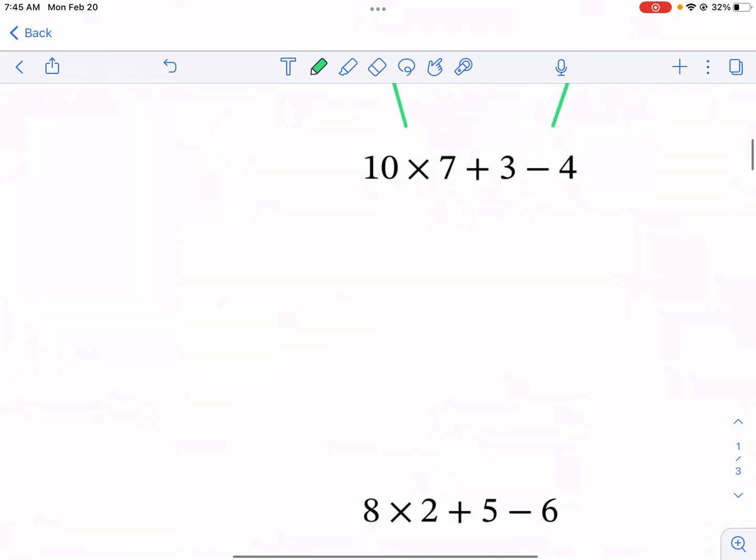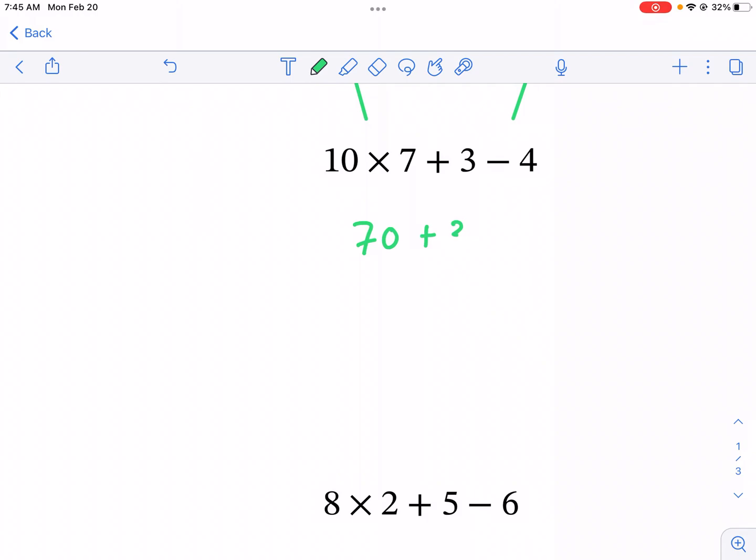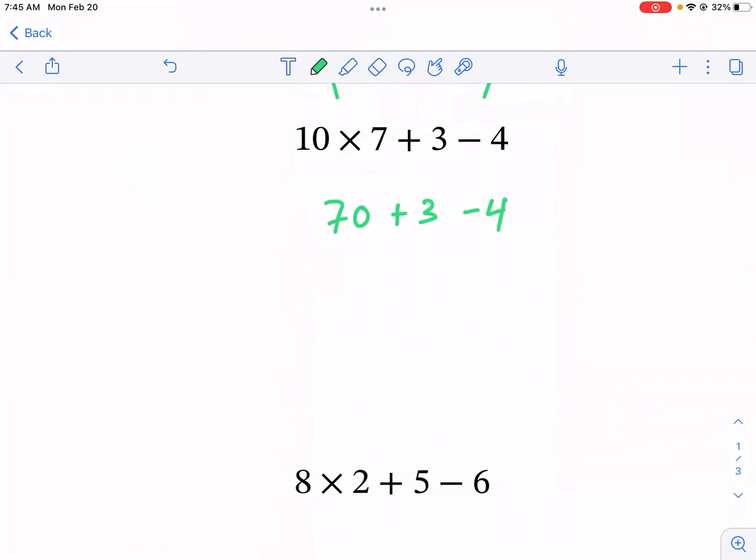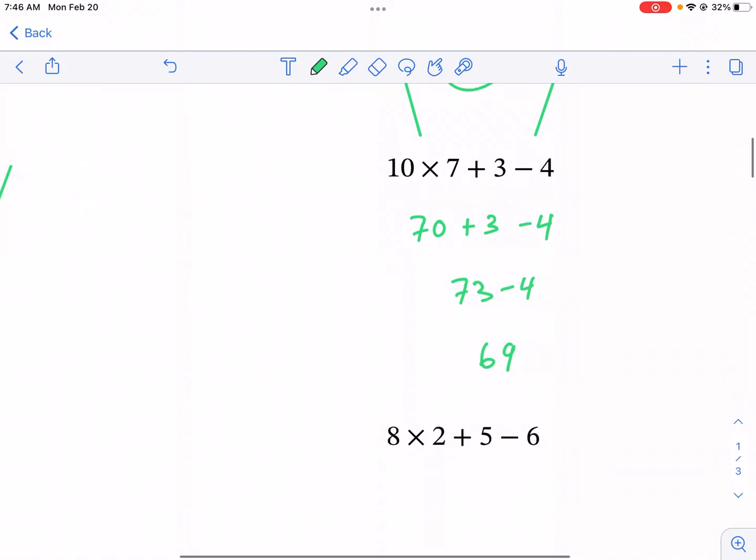Next up, 10 times 7 plus 3 minus 4. There's no parentheses this time, but I have multiplication, so I get 70 plus 3 minus 4. Notice I didn't put my little guiding lines this time, so this is what it will look like if you don't do that. But if you're still working on it, go ahead and keep writing them. So 70 plus 3 is 73 minus 4, and I get 69 as my final answer. Make sure to circle your answer too.